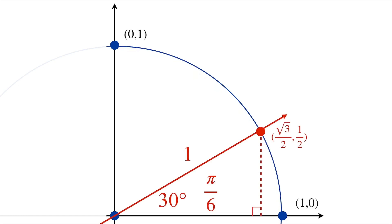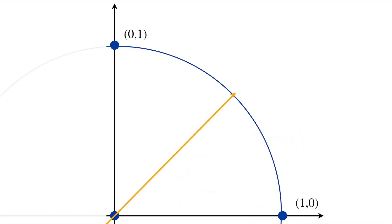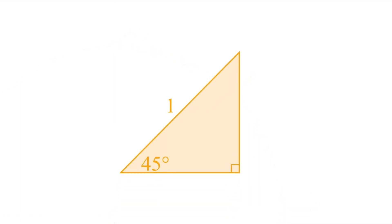Now let's look at our second type of angle. It's a 45-degree angle, or pi over 4, because 45 is one fourth of 180 degrees. We need to find the point where this angle intersects with the circle. So we're going to draw a right triangle again, and the hypotenuse is a radius, so this is 1. It's just a 45-45-90 right triangle. The two legs should be the same, and they should be the hypotenuse divided by root 2. So we'll do 1 divided by root 2, and then rationalize the denominator to get root 2 over 2.